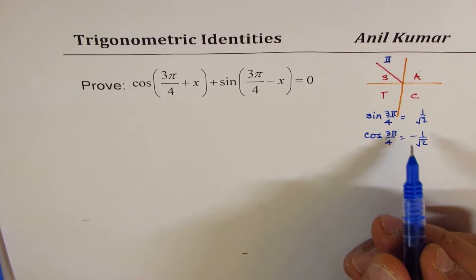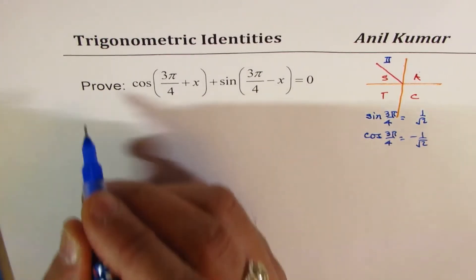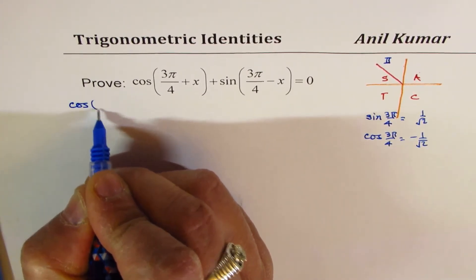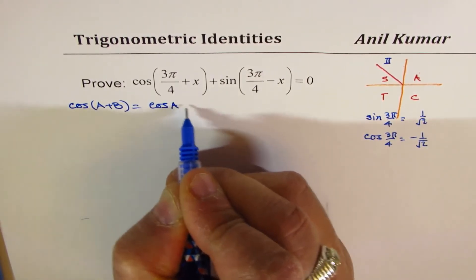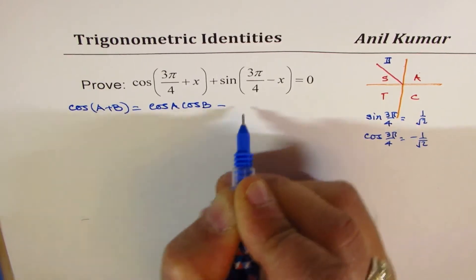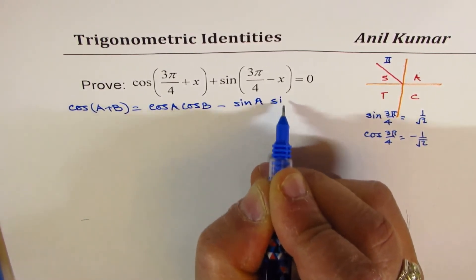So that is one thing. The second thing which you should know is the formula itself. What is cos(a + b)? Cos(a + b) is cos(a)cos(b) - sin(a)sin(b).